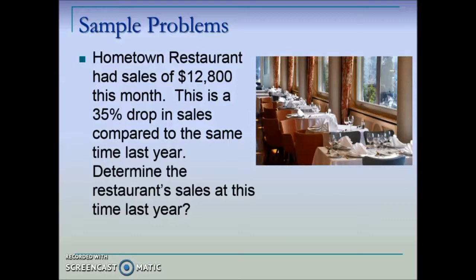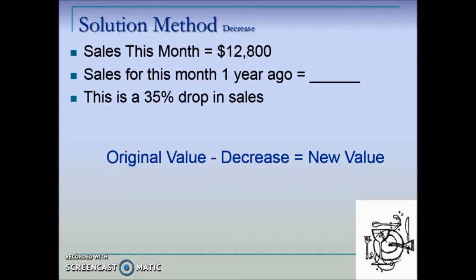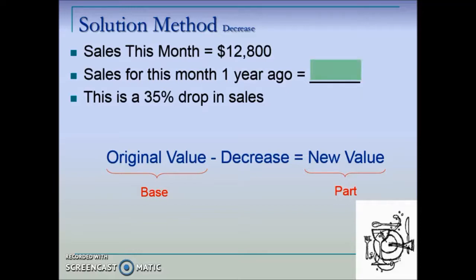In this example: Hometown Restaurant had sales of $12,800 this month. This is a 35 percent drop in sales compared to the same time last year. Determine the restaurant's sales at this time last year. We know our ending value and the percent change, and we're looking for the original number. To solve this, we have a slight change in our formula — instead of adding the increase, since this is a decrease we subtract it. Our original value is the base, and the new value given in the problem acts as the part.